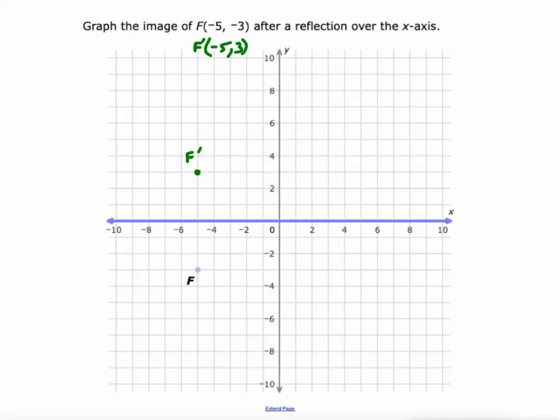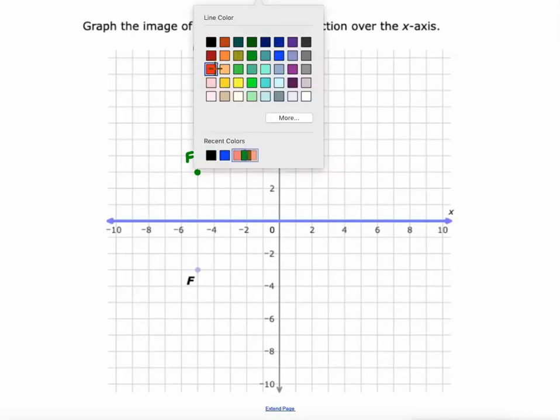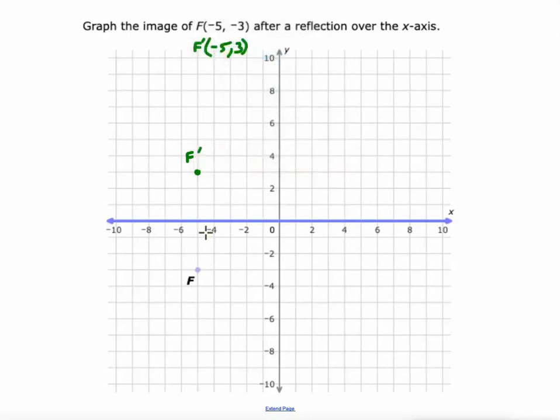Let's look at this as well. If we draw a line connecting f to f prime, we'll see a couple things. Number one is that these lines meet at a 90-degree angle. Number two, that this red line is cut in half by the line of reflection, three units on each side.